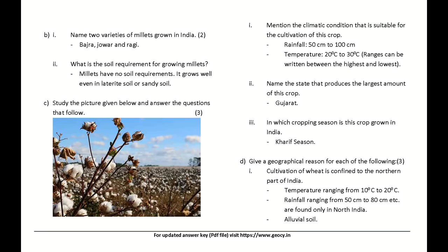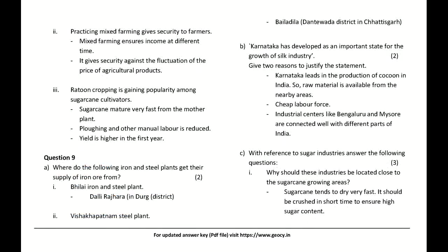Give a geographical reason: Cultivation of wheat is confined to the northern part of India — temperature ranging from 10°C to 20°C, rainfall from 50 cm to 80 cm, and alluvial soil are found only in North India. Practicing mixed farming gives security to farmers — it ensures income at different times and gives security against fluctuation of the price of agricultural products.